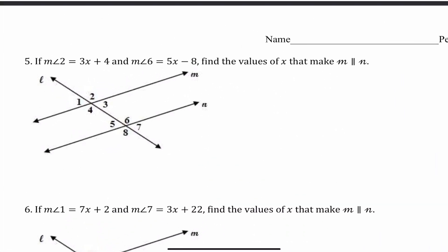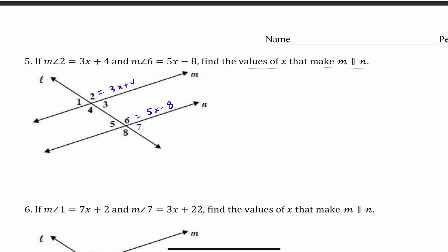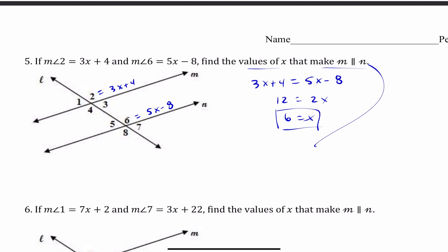Number 5: measure of angle 2 is 3X + 4 and measure of angle 6 is 5X − 8. Angles 2 and 6 are in the same location in their respective regions, so they are corresponding angles and should be congruent. Setting them equal: 3X + 4 = 5X − 8, giving 12 = 2X, so X = 6. Plugging in, they are congruent, therefore M is parallel to N by the Corresponding Angles Converse.